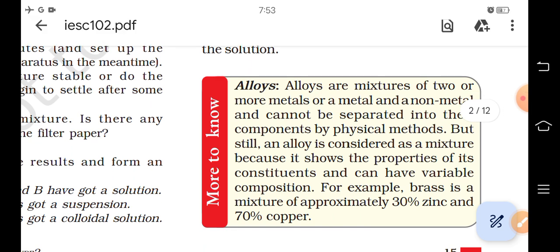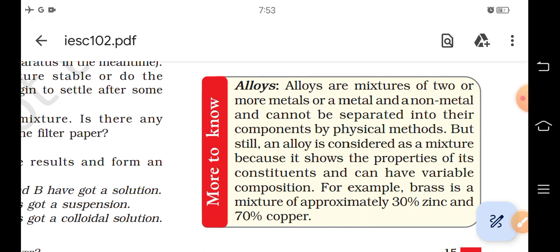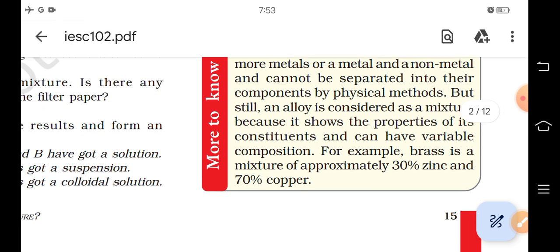More to know: Alloys. Alloys are mixtures of two or more metals or a metal and non-metal and cannot be separated into their components by physical methods. But still, an alloy is considered as a mixture because it shows the properties of its constituents and can have variable composition.